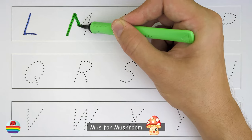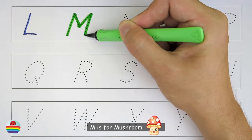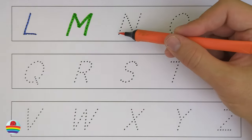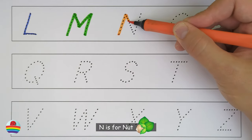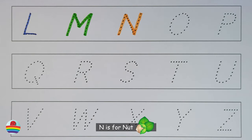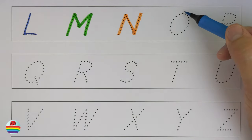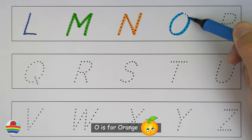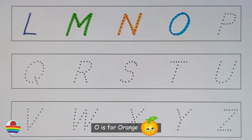M. M is for Mushroom. M. N. N is for Nut. N. O. O is for Orange. O.